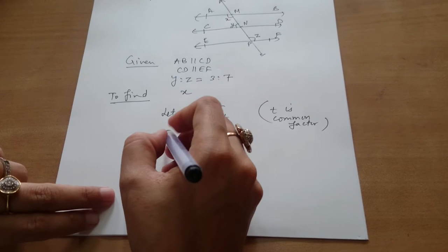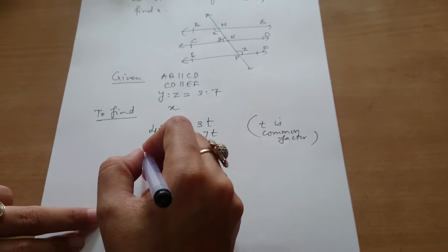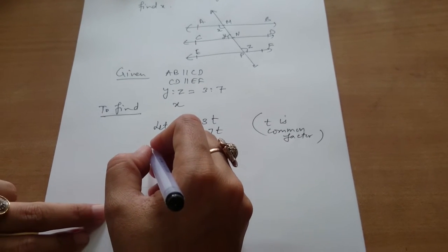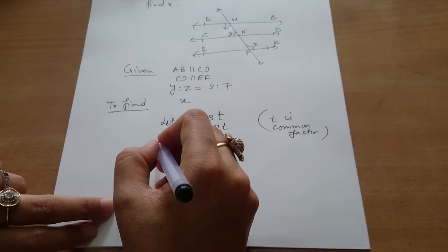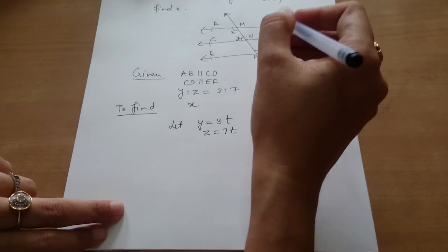To find X, first we have to take the vertically opposite angles.